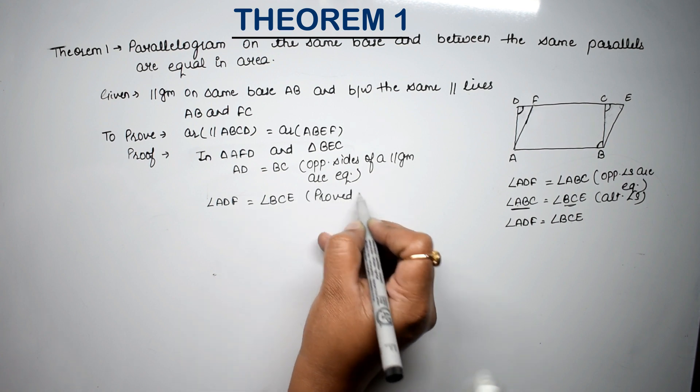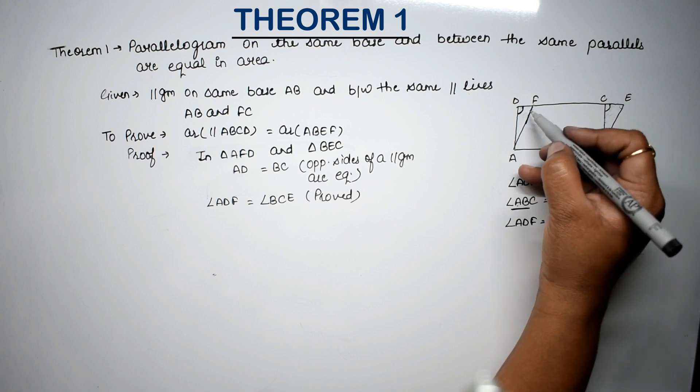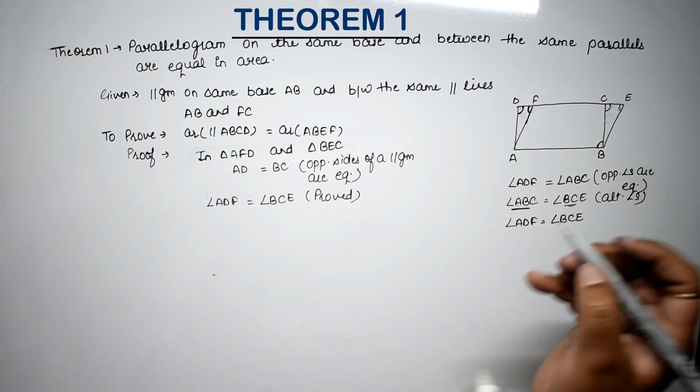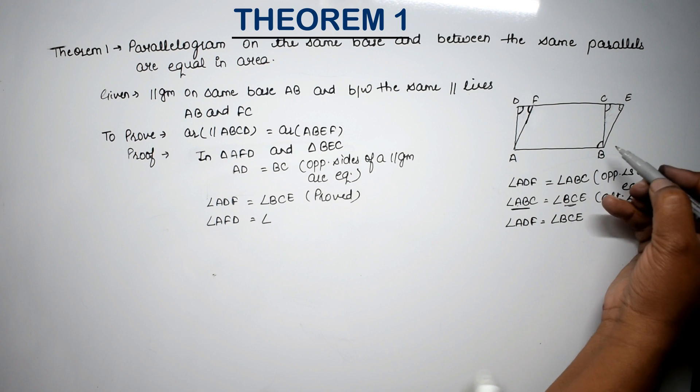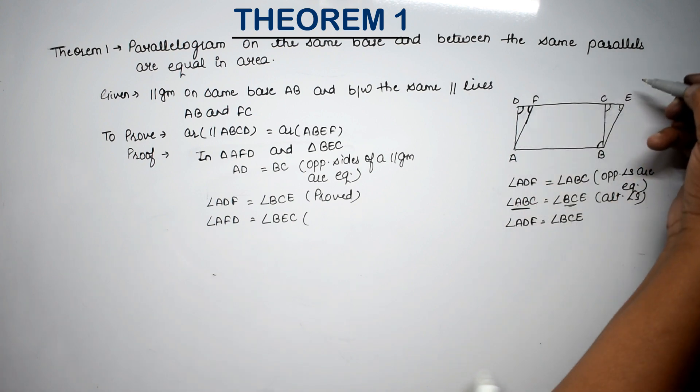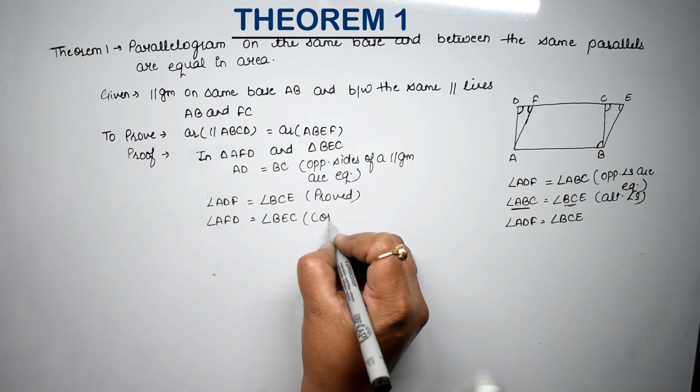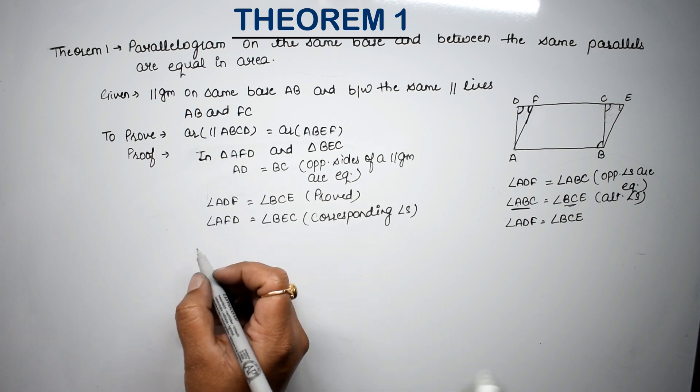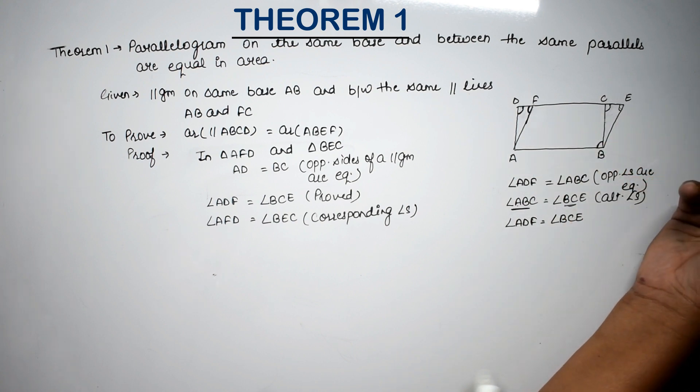We proved this. Similarly we know angle F is equal to angle E. We can say angle AFD is equal to angle BEC. Why? Because you see these two parallel lines and this is their transversal. Right friends? So these are corresponding angles. Corresponding angles. So we can say that both triangles, if you want, AD parallel to BC, these two can also be called corresponding angles. Right friends?